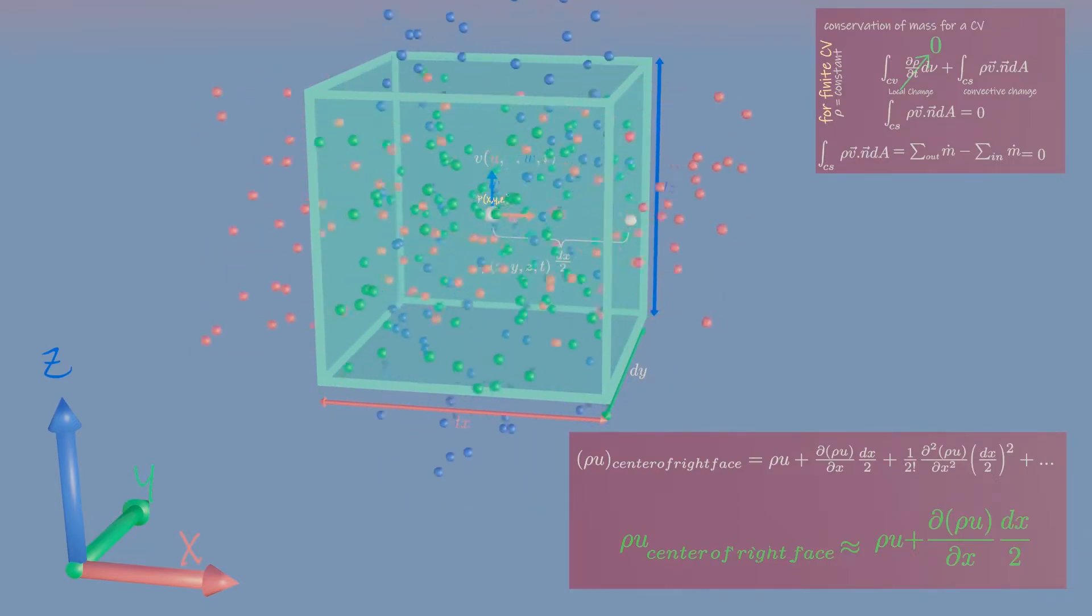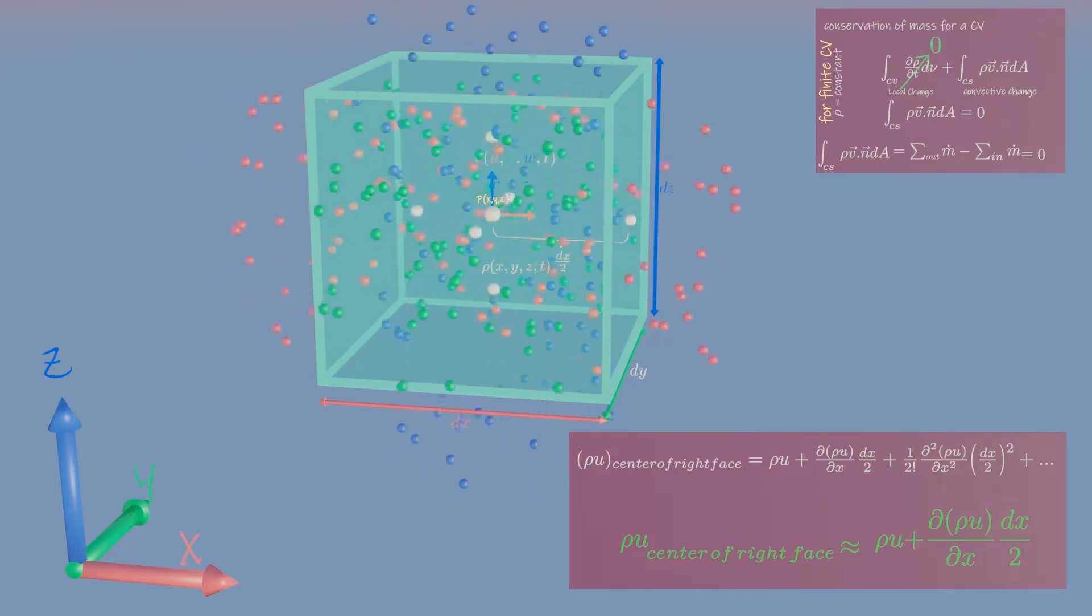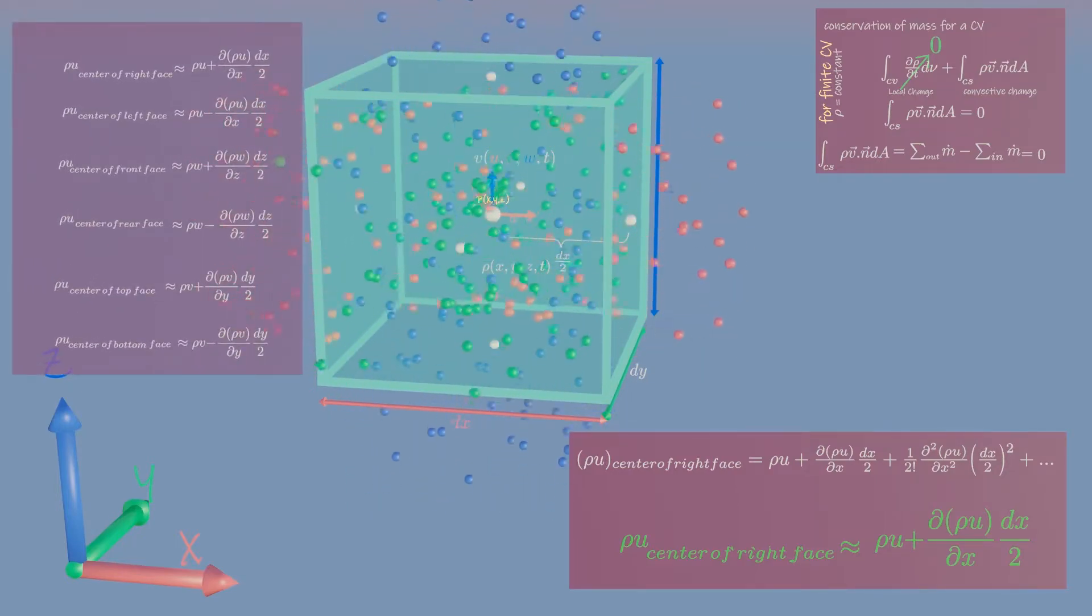Now apply this truncated Taylor series expansion to density times the normal velocity component at the center point of each of the six faces of the box.